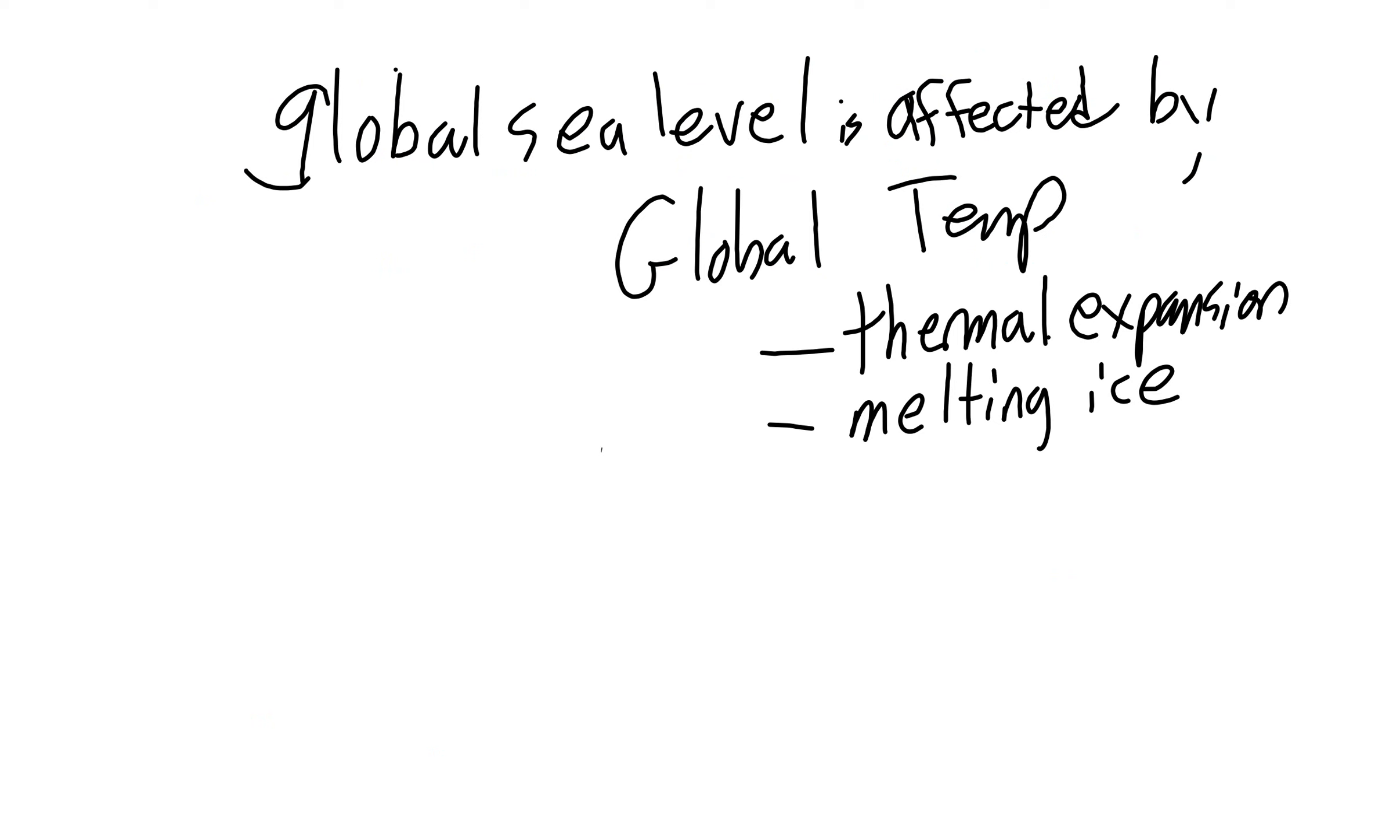Global sea level is affected by global temperature because not only is global temperature going to cause ice to melt, raising sea level, but as the ocean water itself warms up, it's going to expand. We call that thermal expansion. And as it expands, sea level is going to rise. So there are two reasons that global temperatures are going to cause sea level to rise.